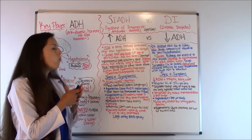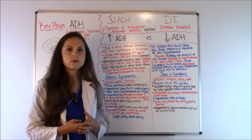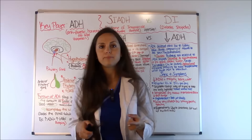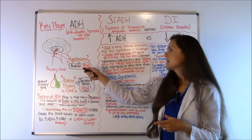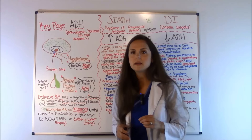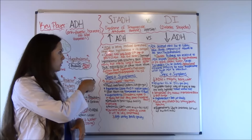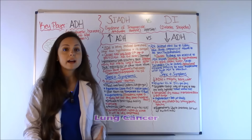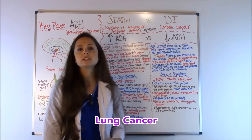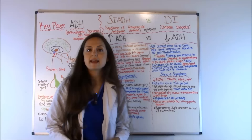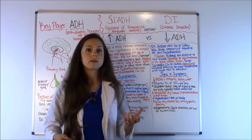What causes SIADH — that over-secretion of anti-diuretic hormone? Usually either the hypothalamus has been damaged (because remember, that's what produces our ADH), or it's being produced somewhere else in the body. One of the number one causes of SIADH is lung cancer — specifically small cell lung cancer — and it's often one of the first signs a patient gets. The cancer causes the anti-diuretic hormone to be overproduced.